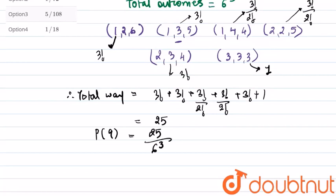So the probability for a sum of 9 to appear is 25 upon 216.